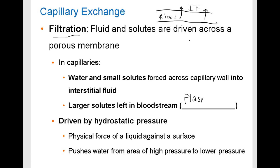Things like plasma proteins and blood cells do not get filtered out of the bloodstream in most capillaries — these large solutes remain in the blood. Filtration is driven by a pressure called hydrostatic pressure. Hydrostatic pressure occurs because of the physical force of a liquid pushing against a surface when that liquid is in a contained space. Blood gets pushed into the capillaries under pressure, pushing water and small solutes from an area of high pressure toward an area of lower pressure, filtering things out of the bloodstream.